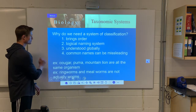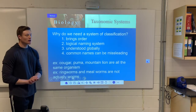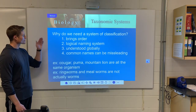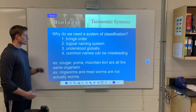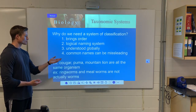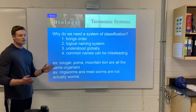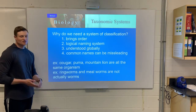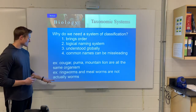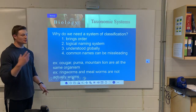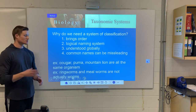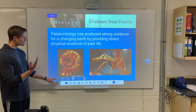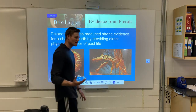So like I said, why do we need this? It's a logical system understood globally. Common names cause problems — for example, the cougar, the puma, and the mountain lion are all the same organism. Ringworms and mealworms aren't actually worms. So this kind of gives us order and global logic. Now, into some evidence of evolution.